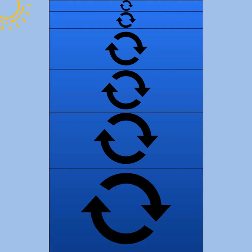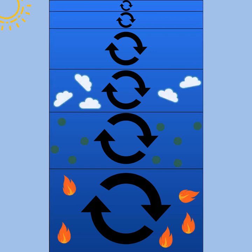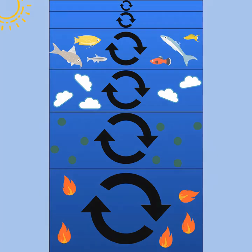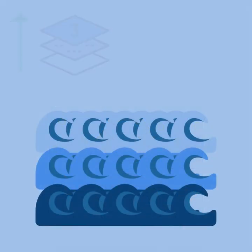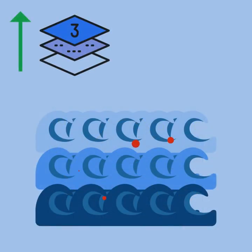Each layer retains most of its heat, minerals, gases, and marine life. The layers are limited in their access to each other. Due to increased stratification, heat is not being properly distributed throughout the ocean's depths, which impacts the ocean's heat uptake.